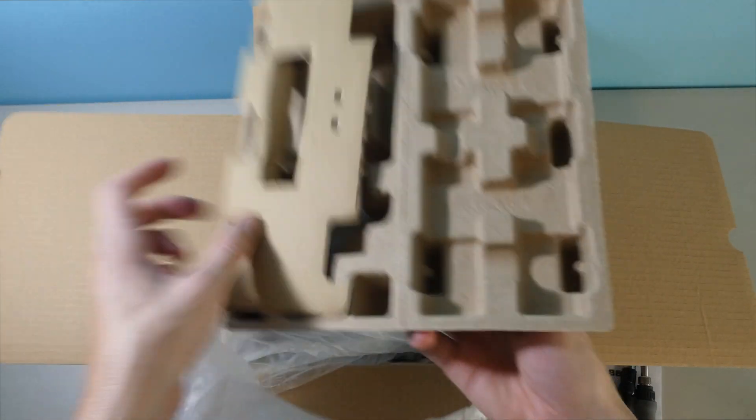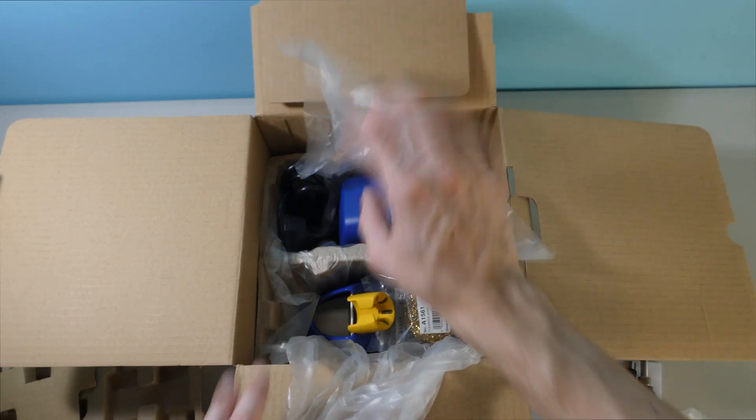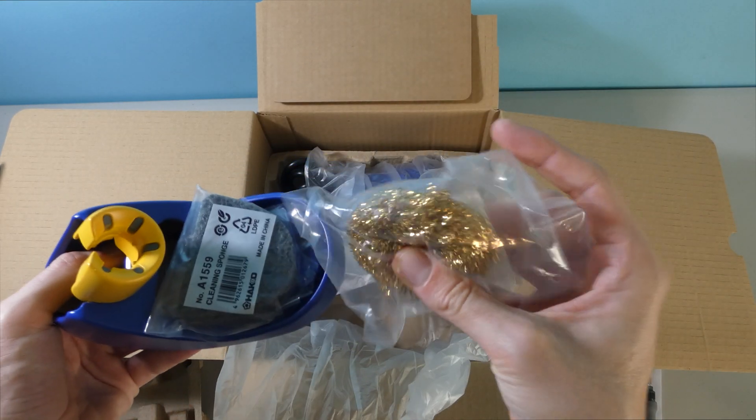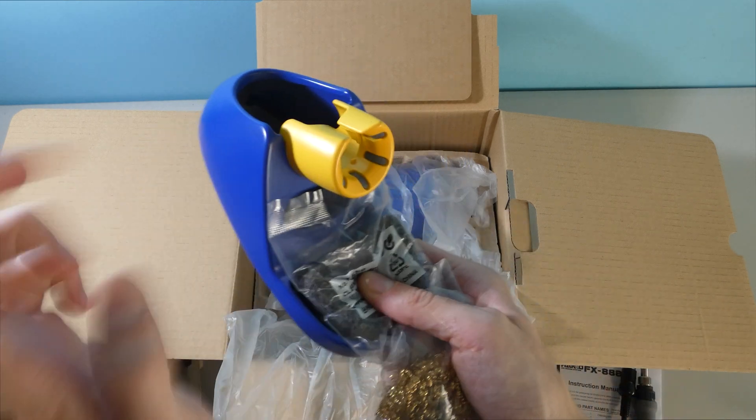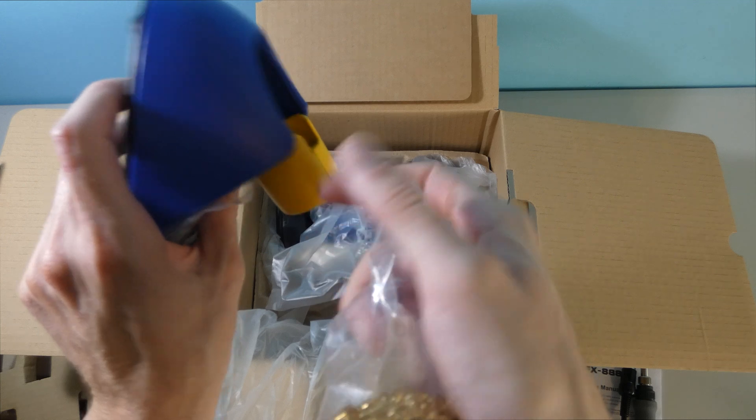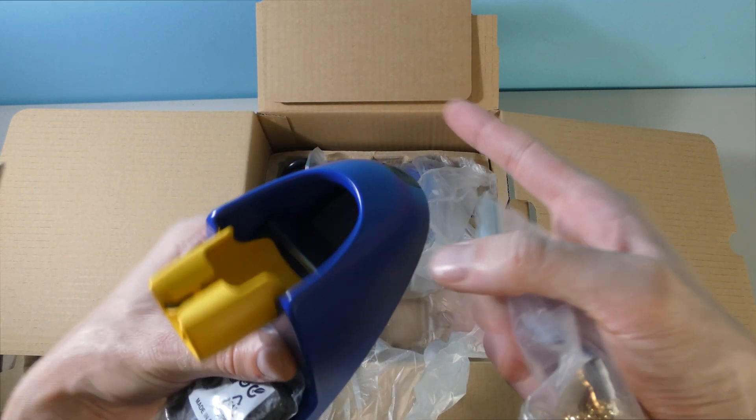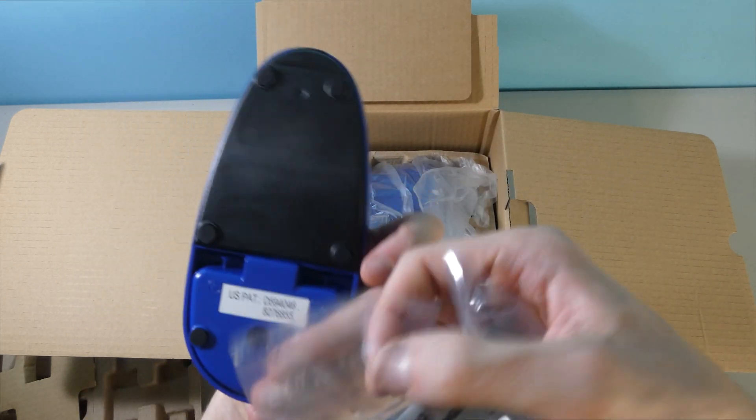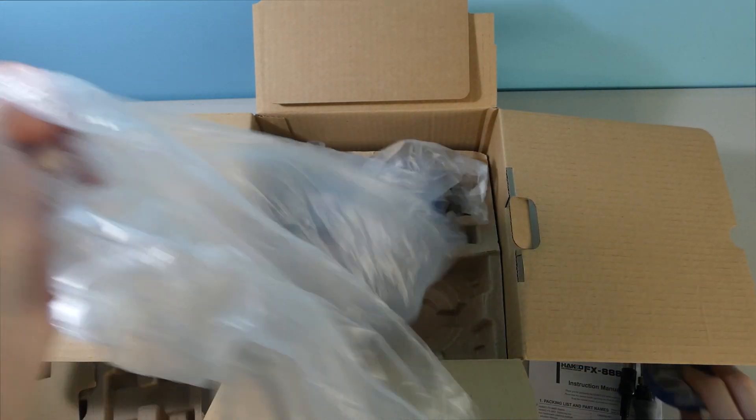This is the iron base itself. Comes with one of those steel wool wicking stations and a little sponge, which is always nice. This thing is actually metal, not plastic. Very cool, so you don't have to worry about burning or melting anything. It's got a metal dish inside, all cast metal. Very nice.